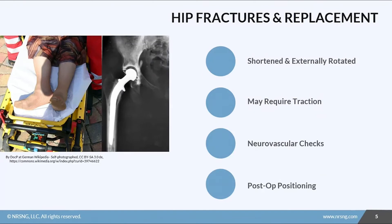If the patient does have a hip fracture, when they present their leg will be shortened and rotated externally — that's the classic sign of a hip fracture. These patients usually require traction until they can go to the OR for a hip replacement.